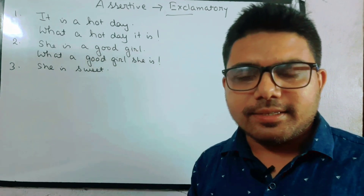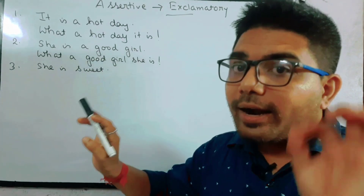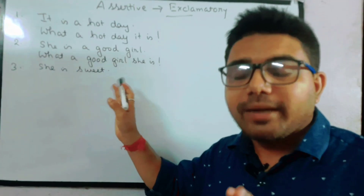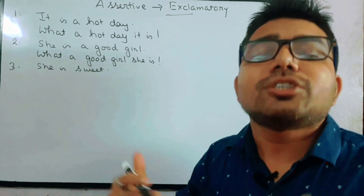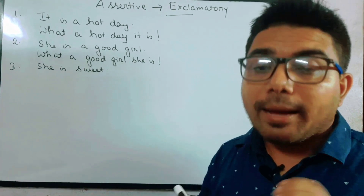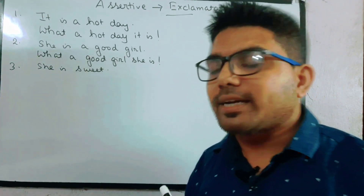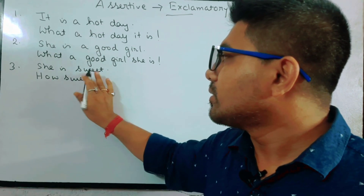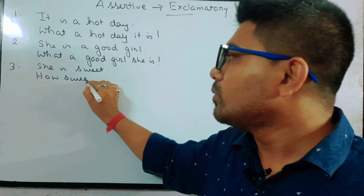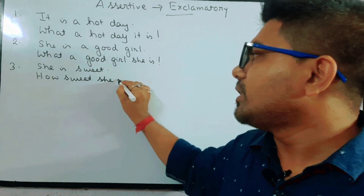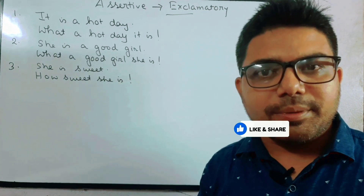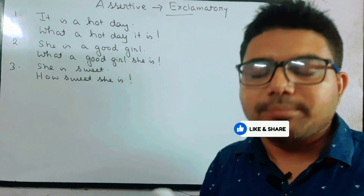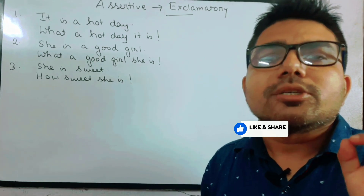Now if the sentence is 'She is sweet' — here no article is used, only an adjective is given. So here we start with 'How.' The exclamatory form is: 'How sweet she is!'